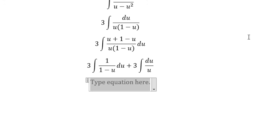So we can get the final answer. That's negative 3 because we have the negative u in here, multiply with the logarithm of the absolute value of 1 minus u, plus 3 multiplied with logarithm of absolute value of u.